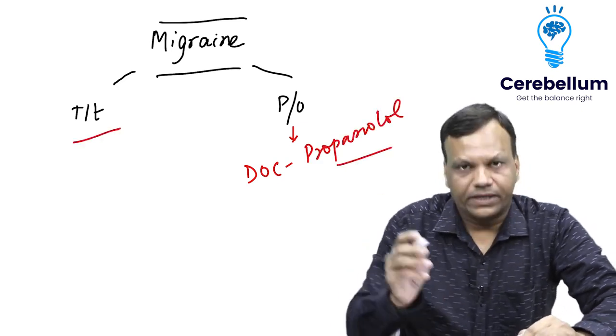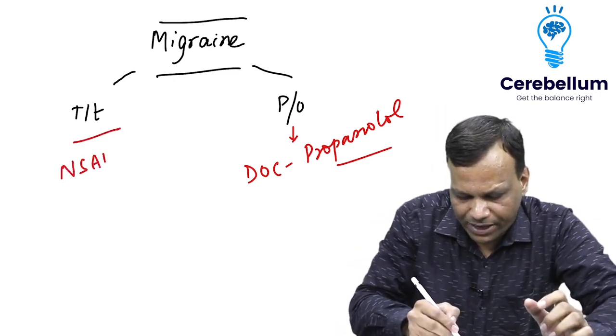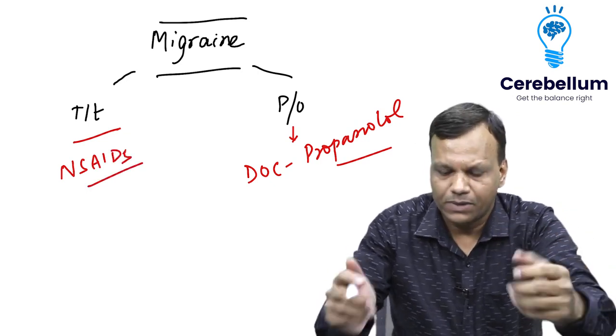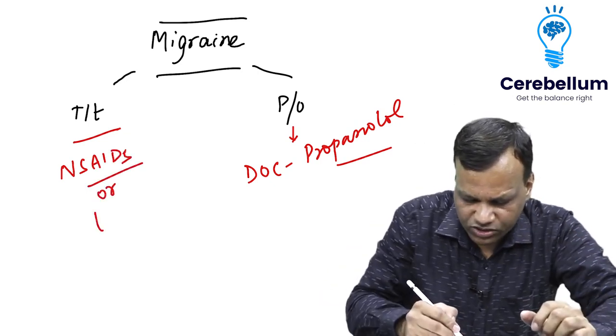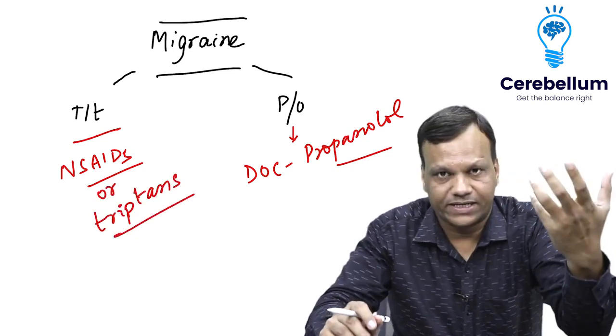Now coming to treatment. For treatment, because it is a headache, we will start with NSAIDs like paracetamol or aspirin-like drugs. If it cannot be controlled by them, then we give the drug of choice for severe migraine which are called tryptans, drugs like sumatriptan.